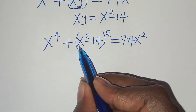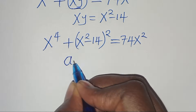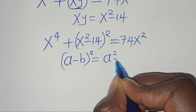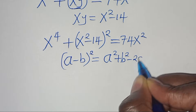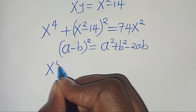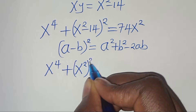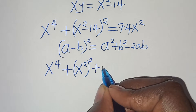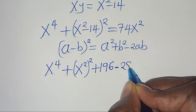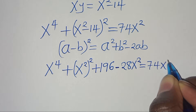Let's expand (x squared minus 14) squared. This is in the form (a minus b) squared, which equals a squared plus b squared minus 2ab. Applying this identity, we get x to the power of 4 plus x to the power of 4 plus 196 minus 28x squared equals 74x squared.